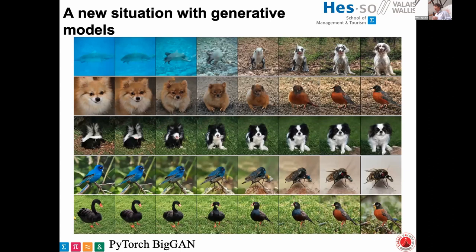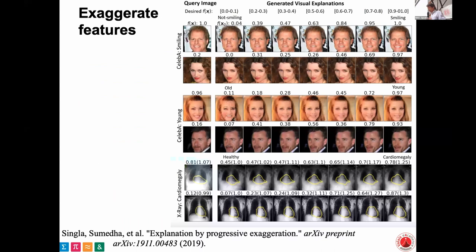With generative models, you can generate anything between a dog and a dolphin, and look at when a classification switches. We can use similar concepts when generating medical images — for example, exaggerating both ways as a method of interpretability. There's a paper from arXiv where they look at exaggeration in both directions. You can apply this to medical concepts like an enlarged heart — generate images and compare whether the classification and the exaggerated models make sense.